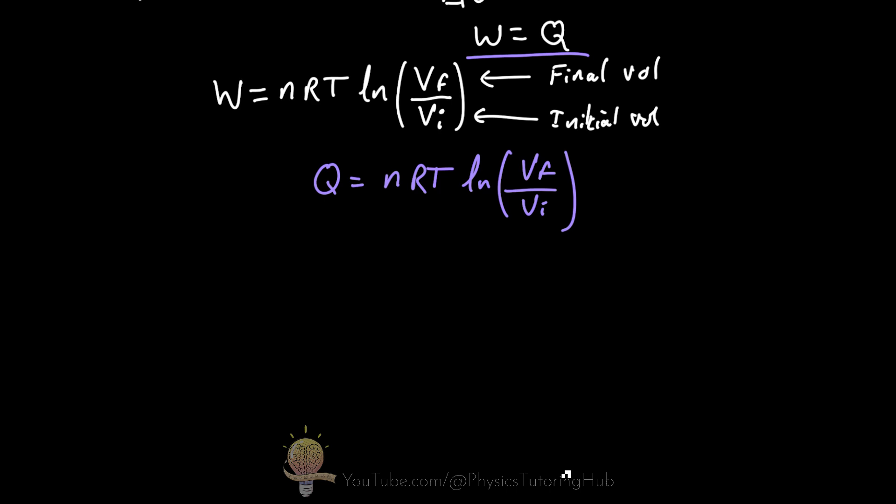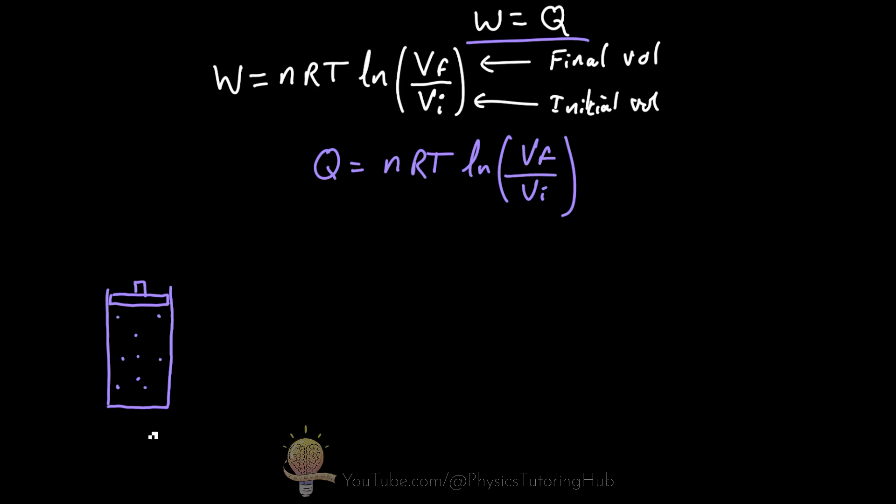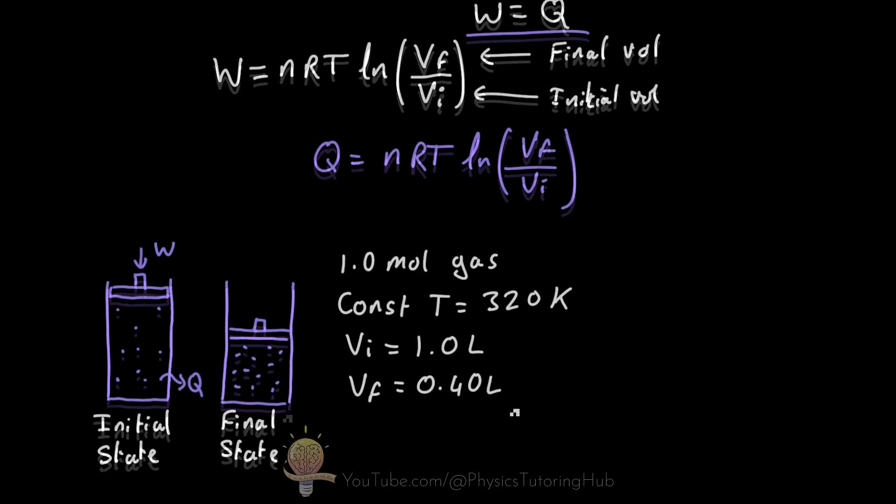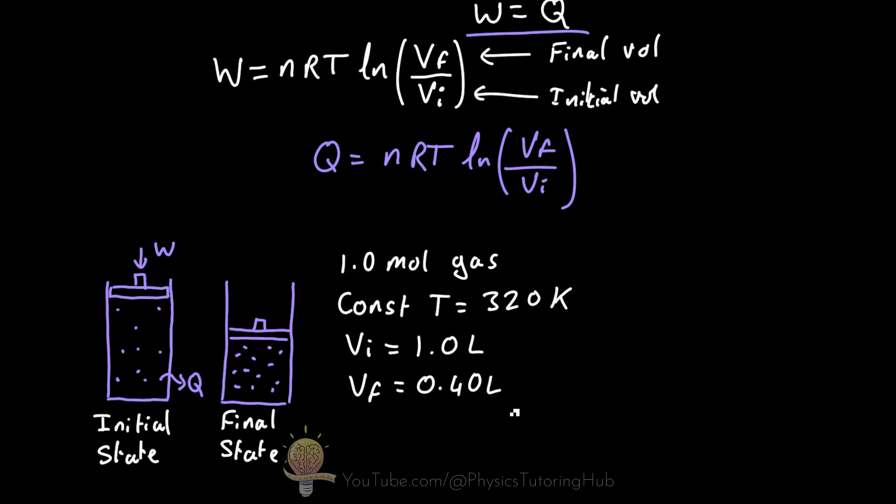So let's try a worked example now. Let's say we have one mole of gas in our piston and it remains at a constant temperature of 320 Kelvin. If the volume of gas reduces from one litre to 0.4 litres, what is the work done by the gas during this isothermal process? And how much heat is the system exchanged into or out of the system?